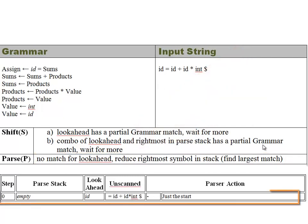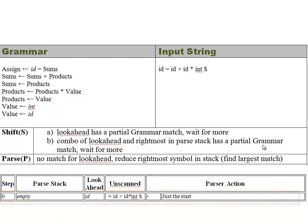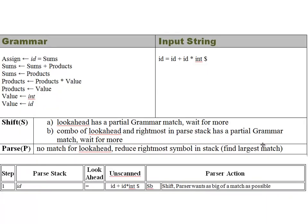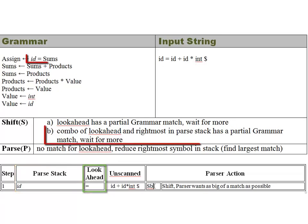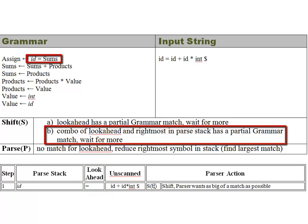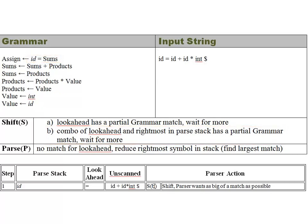In step zero, we have an empty parse stack, our look-ahead is an ID, and the unscanned portion is the rest of the input. In step one, we have shifted the ID onto the parse stack and our next look-ahead is the equal sign. Because ID and equal sign have a combination, we do a shift using condition B — the combination of the look-ahead and the rightmost has a partial match to the assignment production ID equals. We haven't reached sums yet, so we wait and shift.